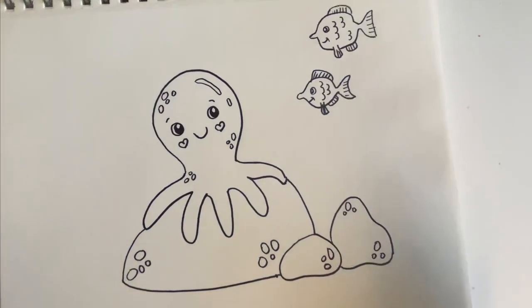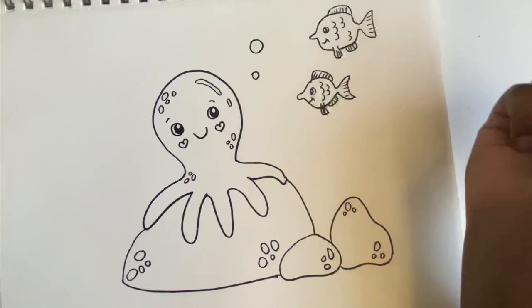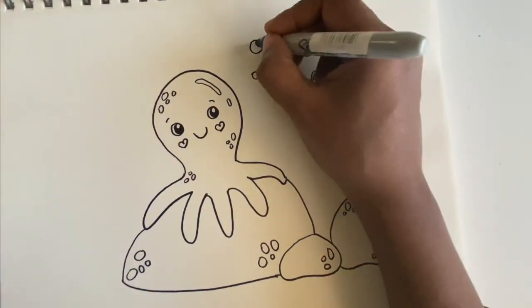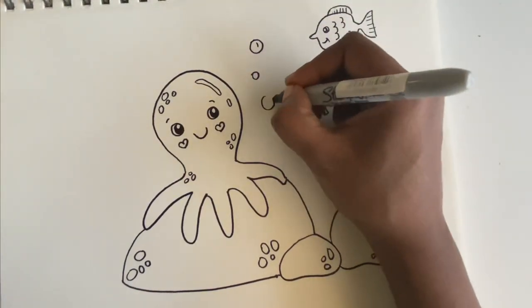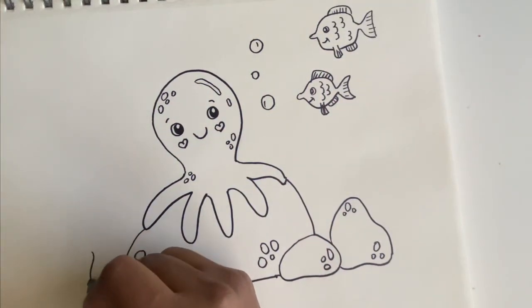Now let's add in some bubbles. So make them in different sizes. You can even add bubbles all around. That'll look really nice as well. Now let's make a sea anemone.